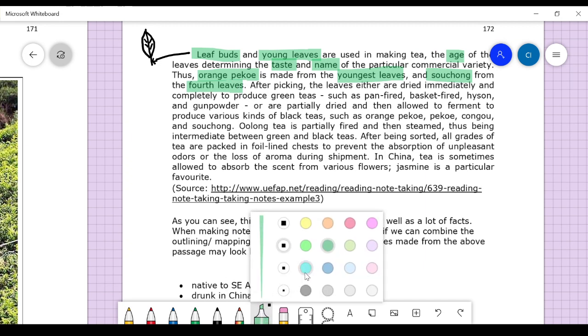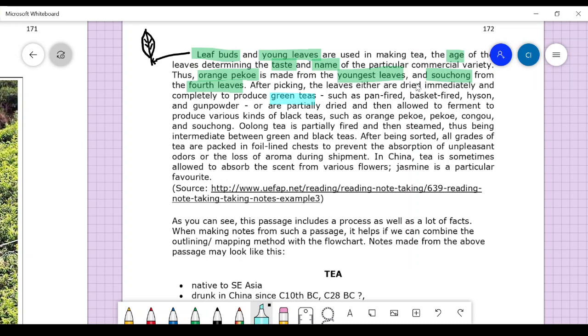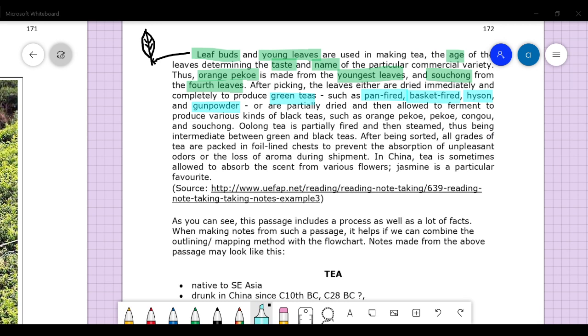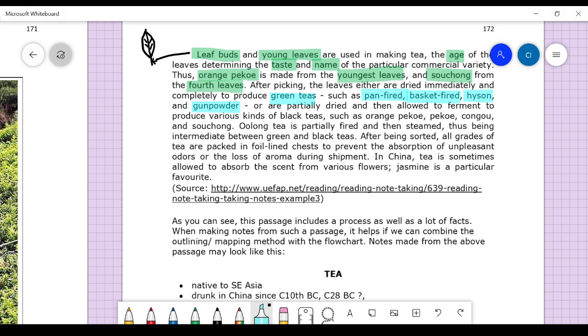After picking, the leaves are either dried immediately or completely processed to produce green teas. Most are not dried in the sun because it may evaporate all the aroma. They do it in a pan-fired, basket-fired, high sun, or gunpowder method. High sun is a kind of Chinese technique for metal heating of green teas.